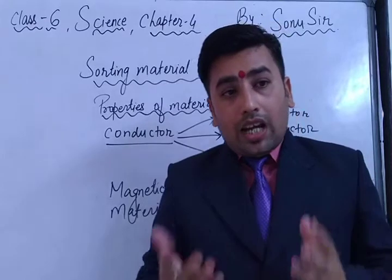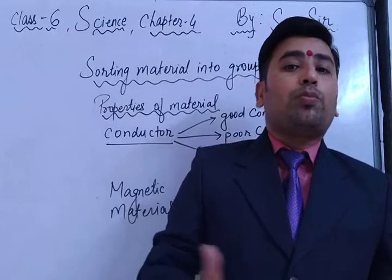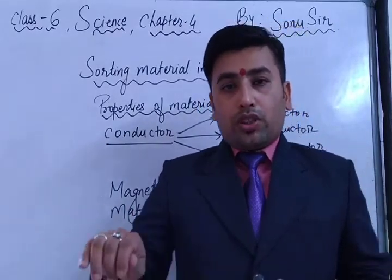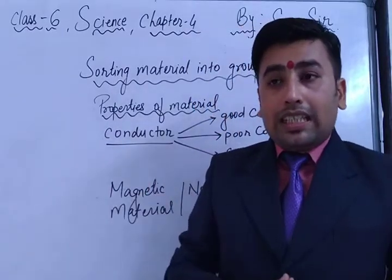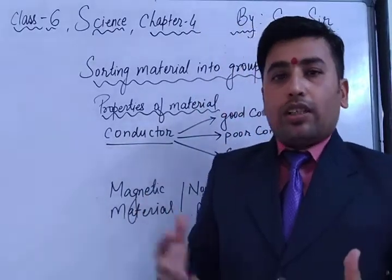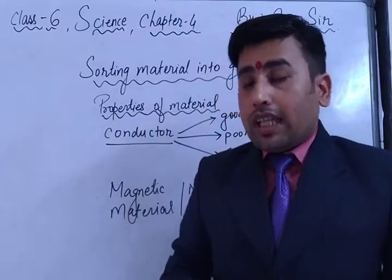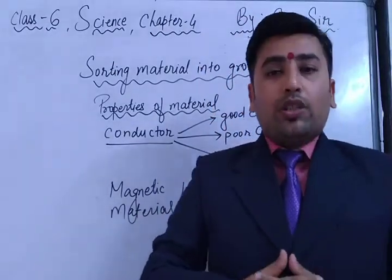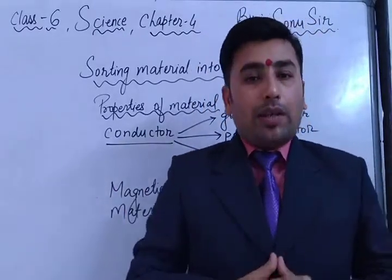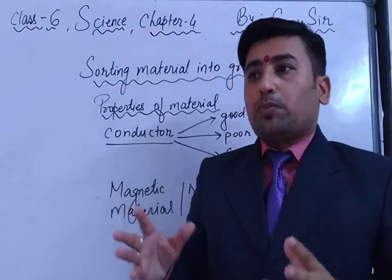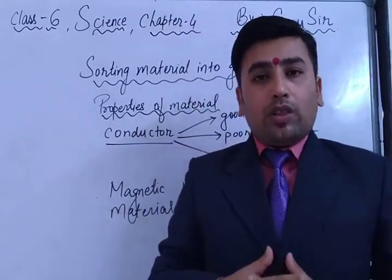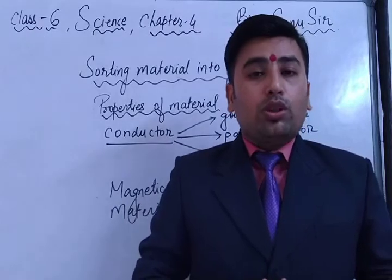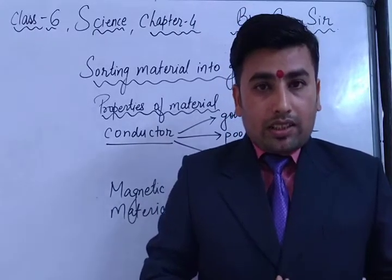Today we are going to discuss the nature of objects that allow heat and electricity to pass through them. Heat is a form of energy — when your mother cooks food on a gas stove, the heat converts raw rice into boiled rice. This property is called conductance. For example, aluminium is used in pressure cookers and utensils because it allows heat to pass through it.